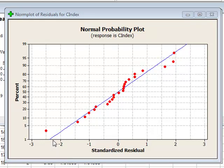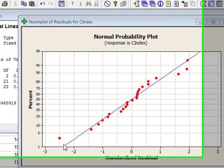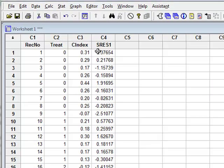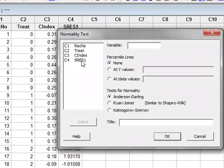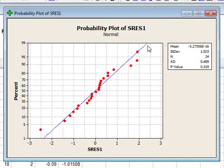To check this distribution, we can look at the residuals themselves, which have been saved in the variable SRES1. So we use Stat, Basic Statistics, and we will request a normality test. And we will select the variable describing the residuals. And we can choose tests for normality using Anderson-Darling, Ryan Joiner, or Kolmogorov-Smirnov. Leaving it as default Anderson-Darling,